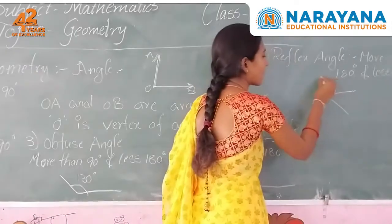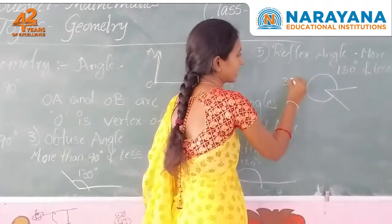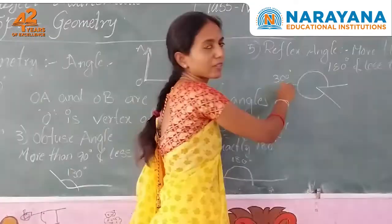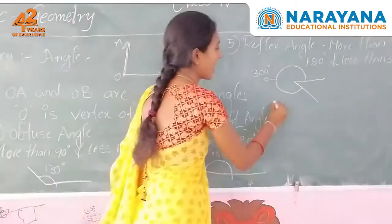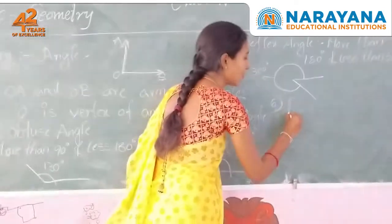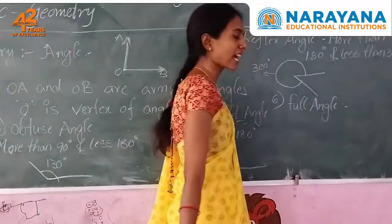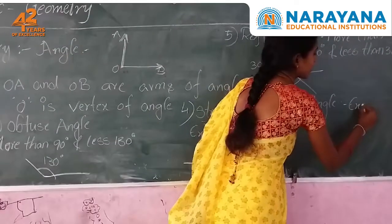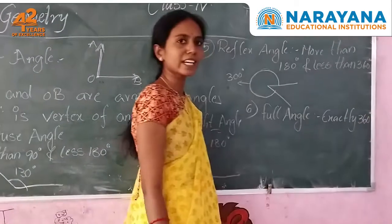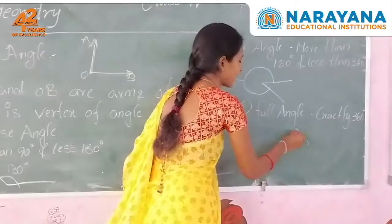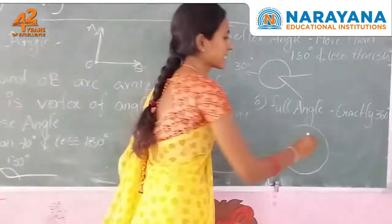The next type is the reflex angle — it is more than 180 degrees and less than 360 degrees. For example, 300 degrees is a reflex angle. The last type is the full angle — it has exactly 360 degrees, which is a complete circuit.